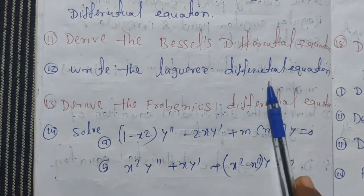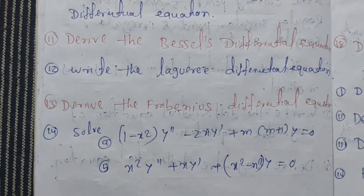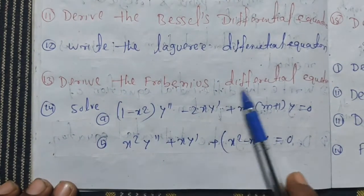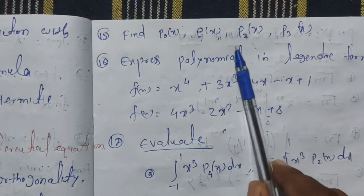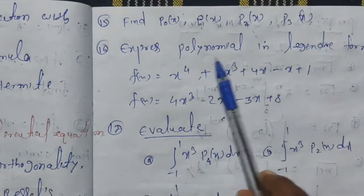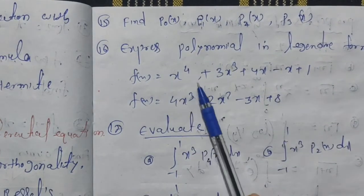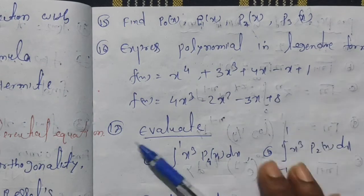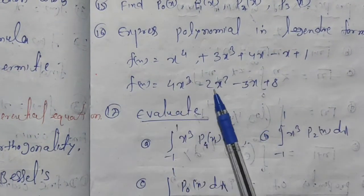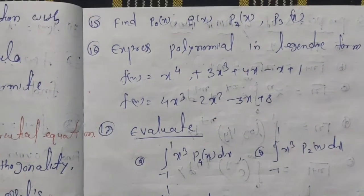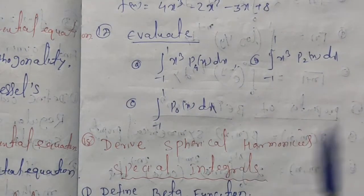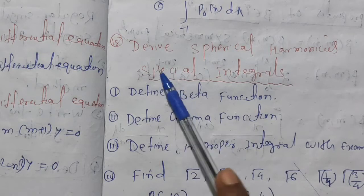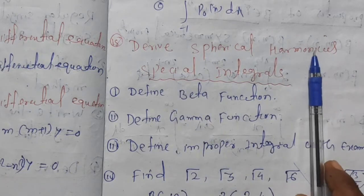Derive the Frobenius differential equation. Express the polynomial in Legendre form: 4 + 3x³ + 4x − x = −x + 1, f(x) = 4x³ − 2x² − 3x + 8. How do you represent the polynomial in Legendre form? Look at the spherical harmonics — this is also an important long question, marked in red.